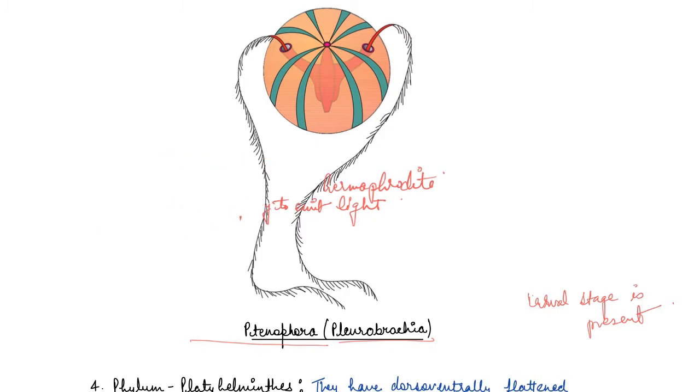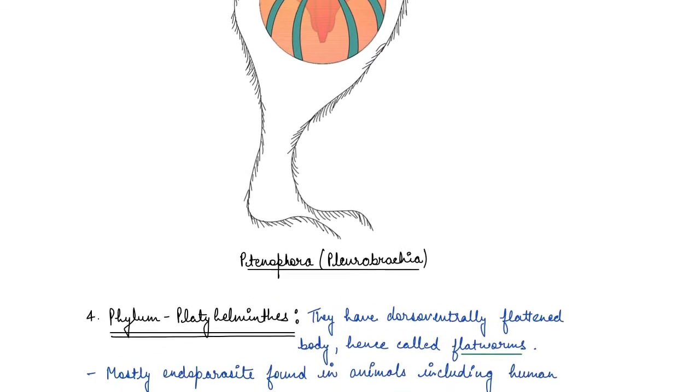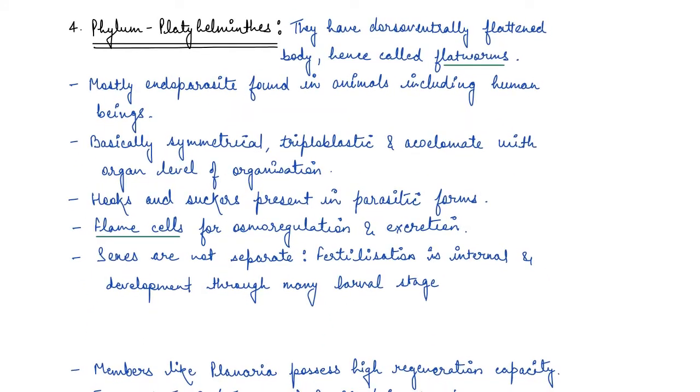Let's move on to the next phylum which is Platyhelminthes. Platyhelminthes are also known as flatworms. Why they are known as flatworms? Just imagine that you have an apple in your hand and you just keep it on a surface and you push it so hard that it becomes flat or it becomes like a very thin slice of apple. They have dorsoventrally flattened body and that is why they are known as flatworms. Mostly they are found as parasites - as endoparasites inside a body of a host, in animals including human beings.